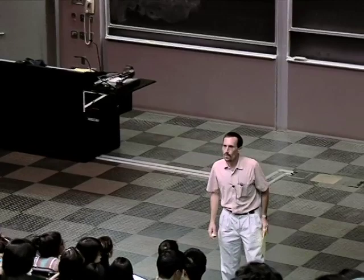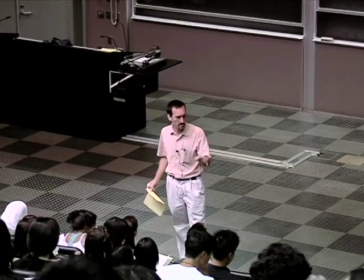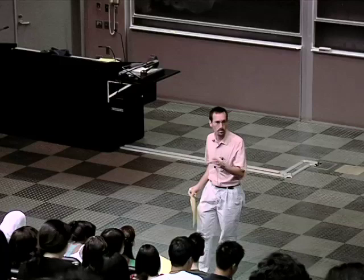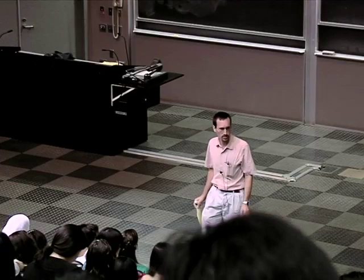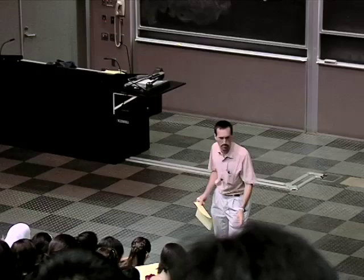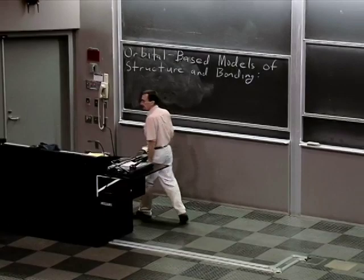Good morning. Up until this point, we've been thinking of bonds as simply shared pairs of electrons between atoms. This is a very good model of structure and bonding — it works very nicely, easy for us to quickly generate structures. Today, we're going to take a slightly deeper look at structure and bonding, and we're going to look at orbital-based models of structure and bonding.